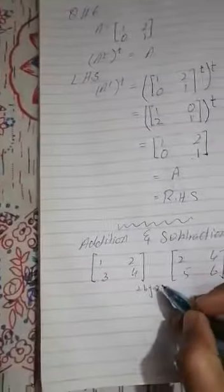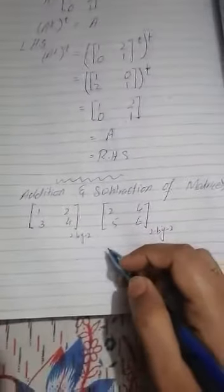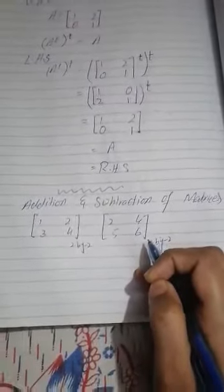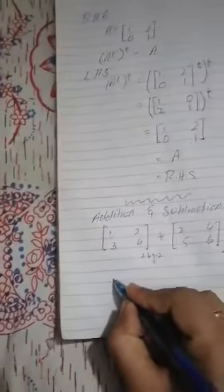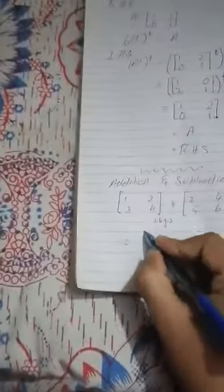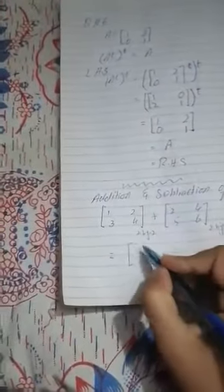Assalamu alaikum. Today we are going to study about the addition and subtraction of matrices. When we add two matrices, if they are of the same order, then we can add them; otherwise, addition and subtraction of matrices are not possible. Here we see that both matrices have the same order, so we can easily add these two matrices.